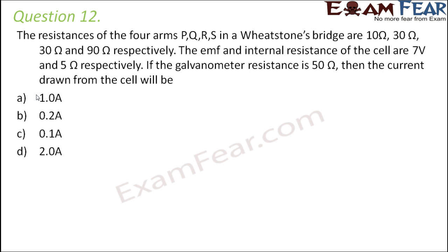Question number 12. The resistances of the 4 arms P, Q, R, S in a Wheatstone bridge are 10 ohms, 30 ohms, 30 ohms, and 90 ohms respectively. The EMF and internal resistance of the cell are 7 volts and 5 ohms respectively.